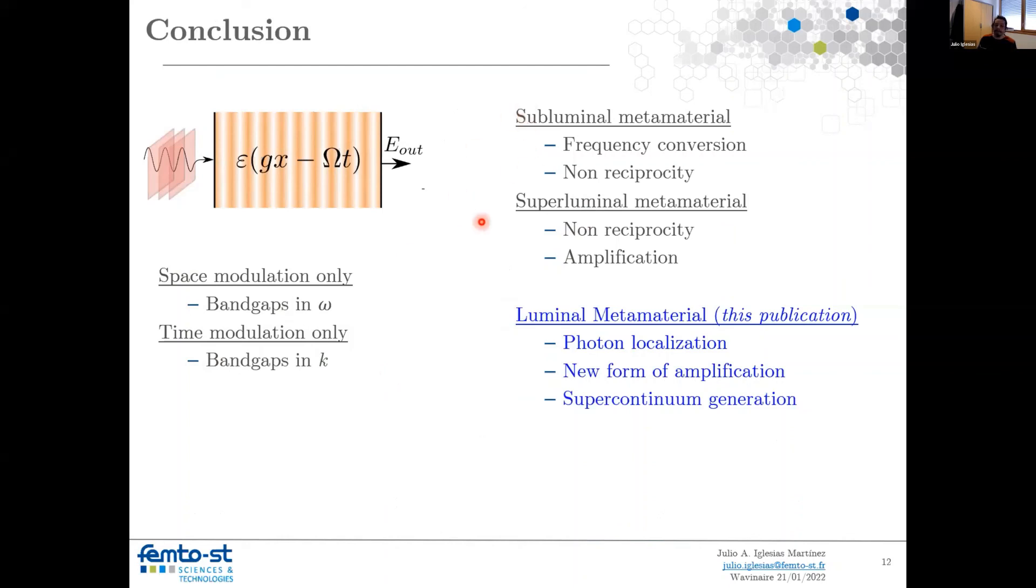In the subluminal as well as the superluminal, it is possible to have a type of amplification, especially in the superluminal phase. But the most important property is the non-reciprocity, and thanks to this, devices that are non-reciprocal such as isolators or circulators have been using, exploiting these concepts.